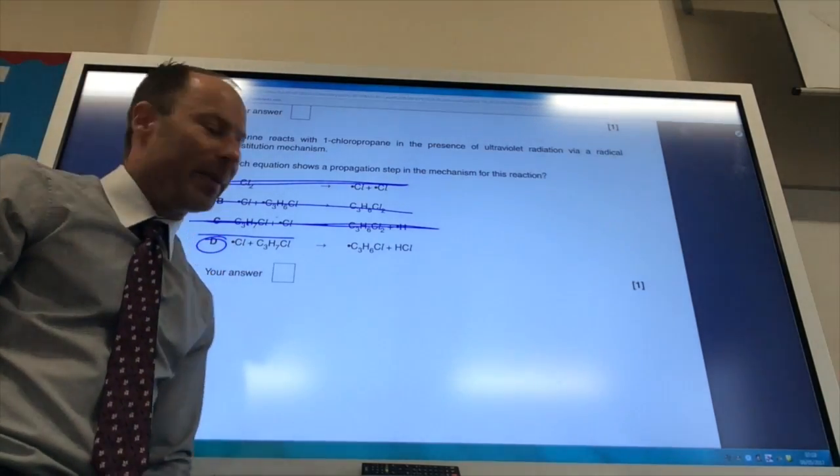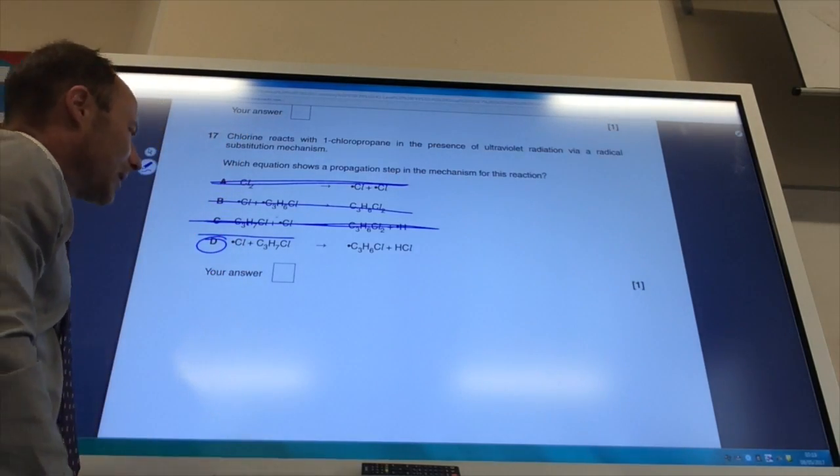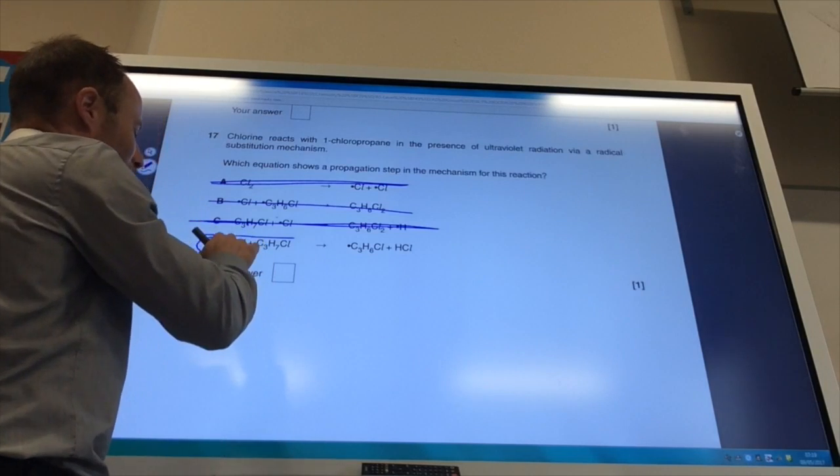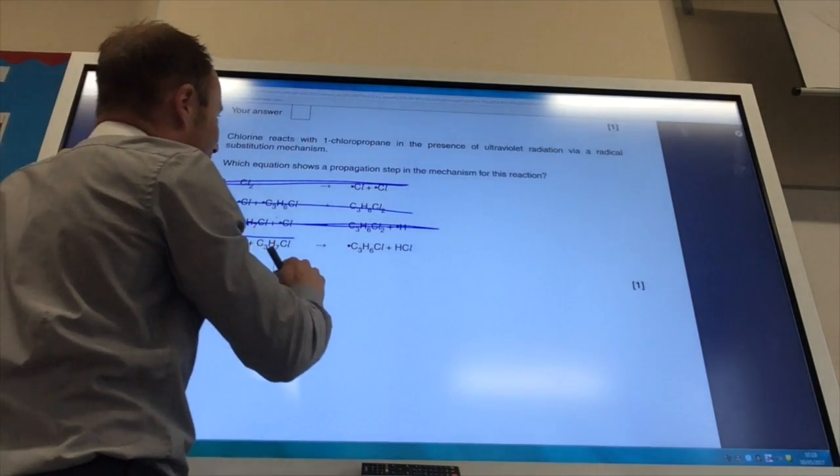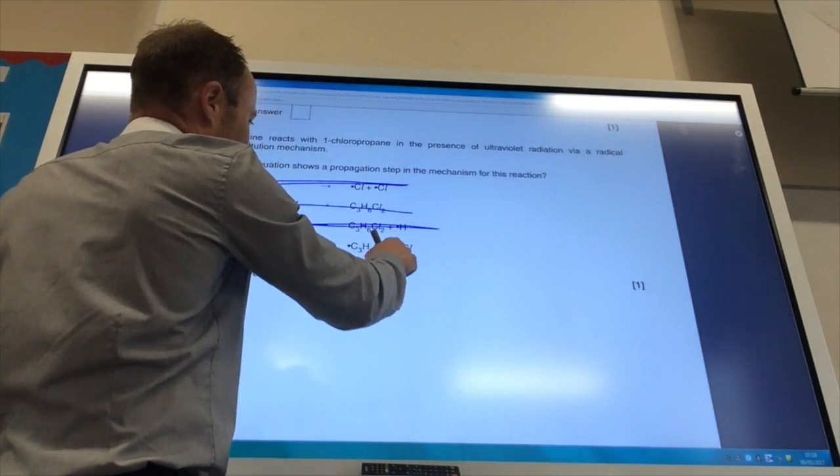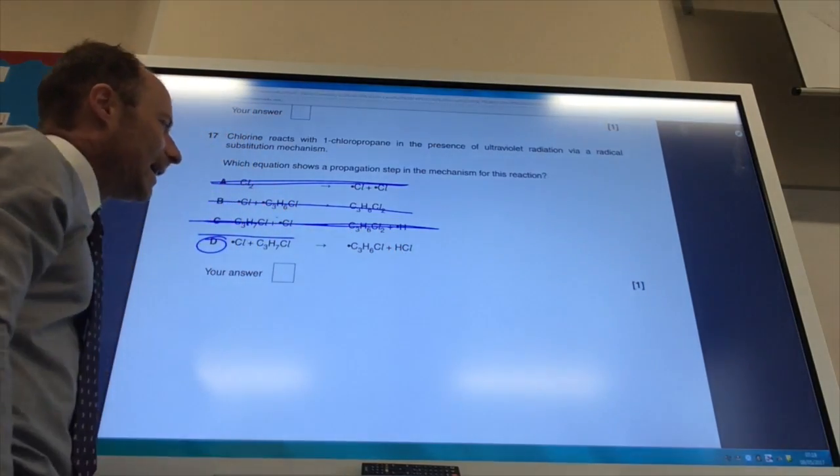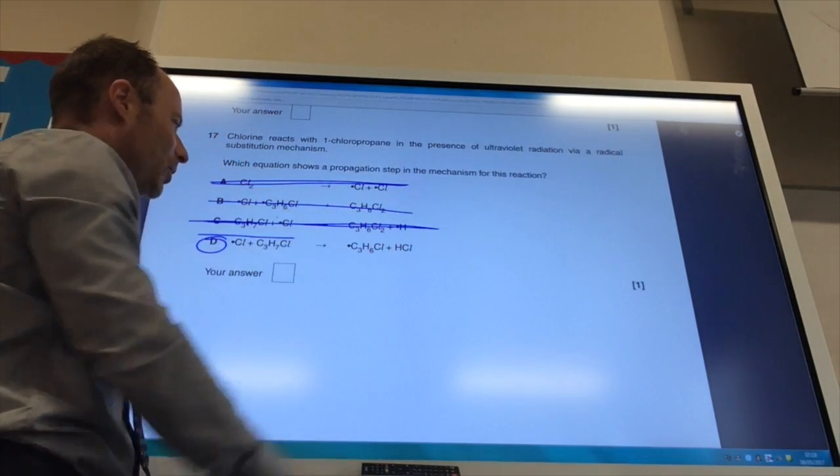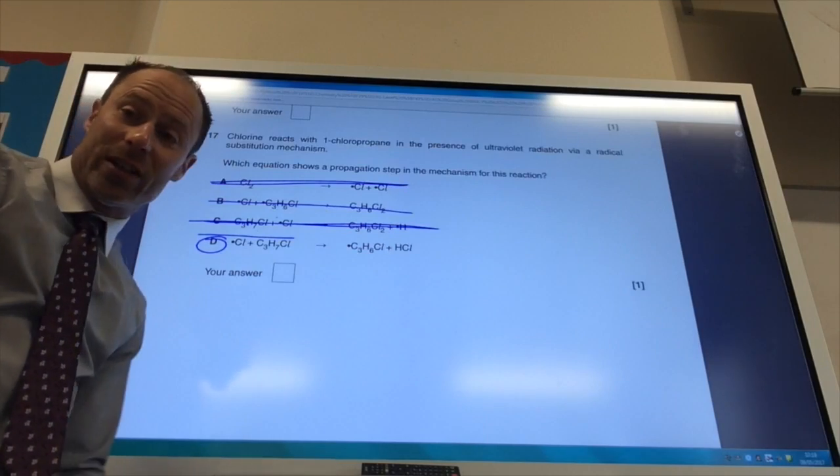Obviously that's the one that looks familiar to you—the first propagation step. Chlorine free radical meets 1-chloropropane to give you HCl and this free radical here, which can then go on to form chlorine. So the answer is D.